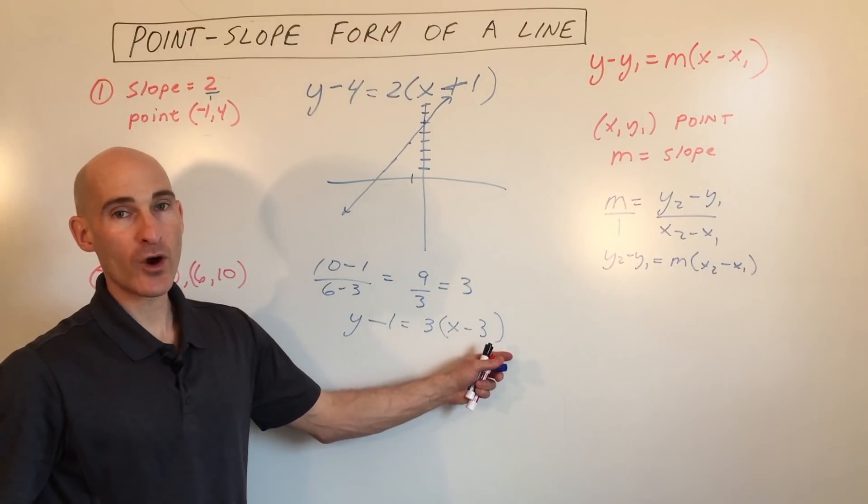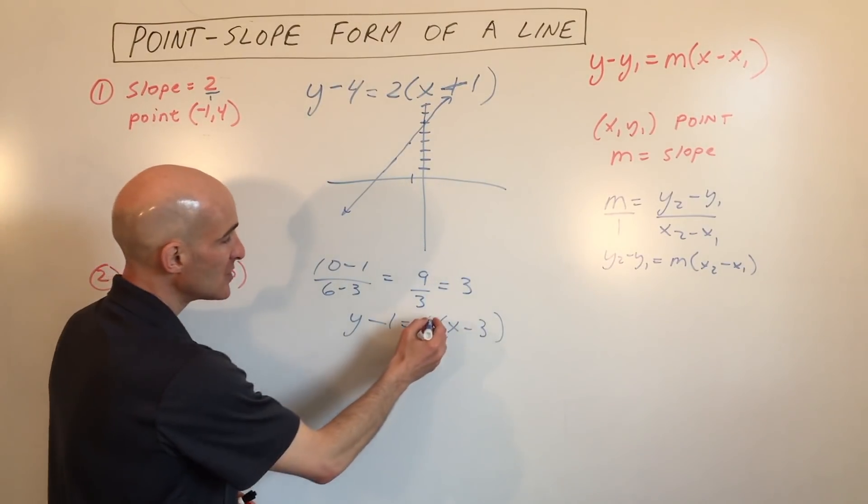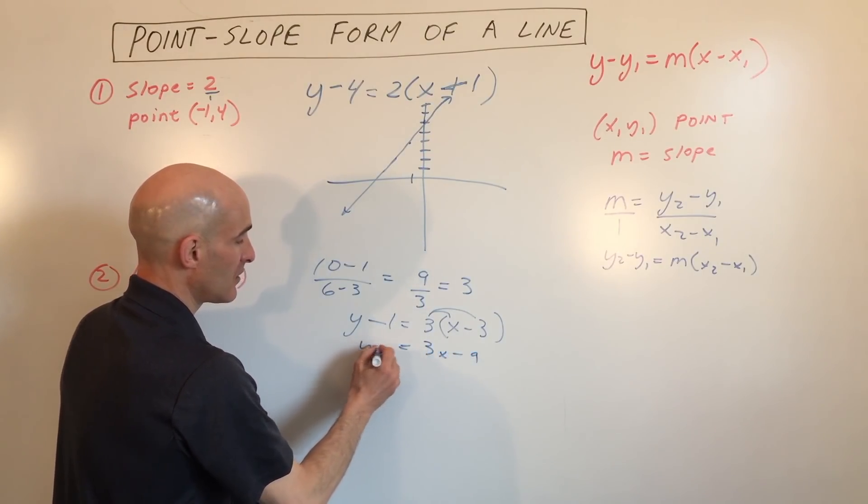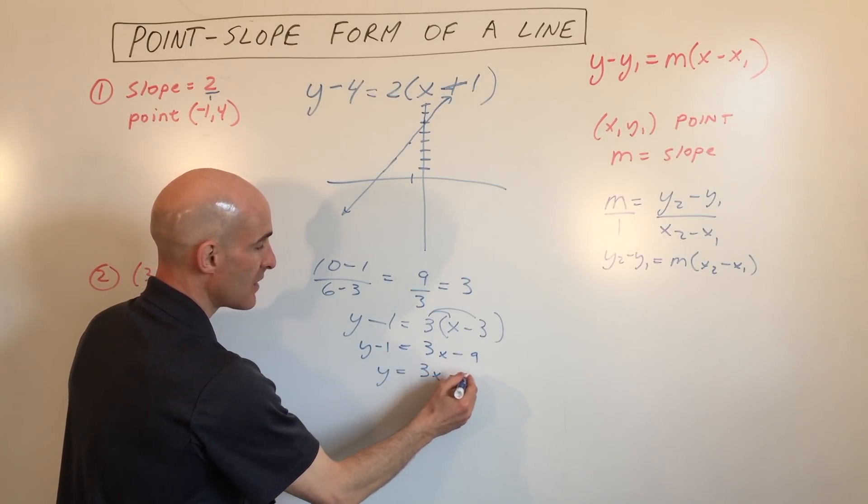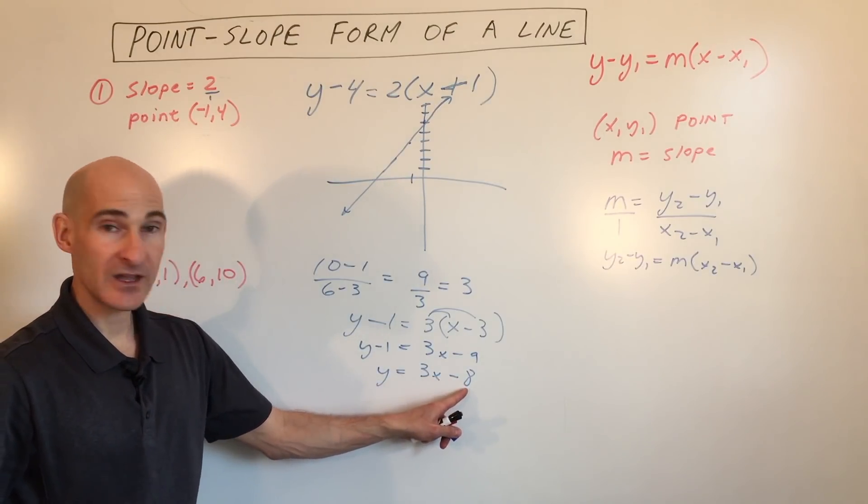Now this is point-slope form. If we want to rearrange it into the slope-intercept form, we can distribute the 3, so that's 3x minus 9. We can add the 1 to both sides, so that's going to give you 3x minus 8. And now we have the equation in the slope-intercept form.